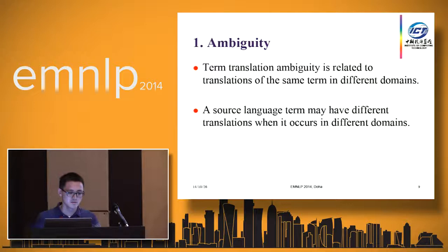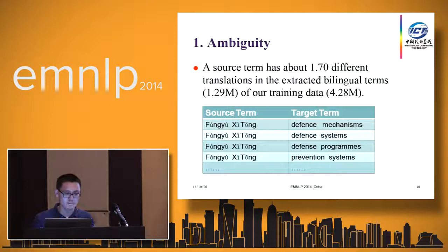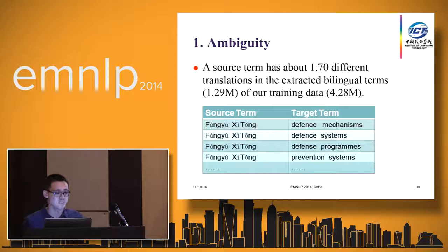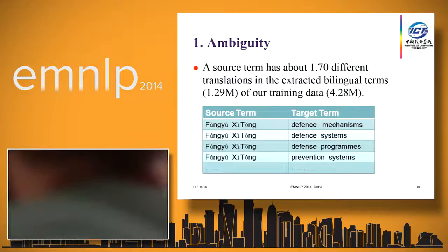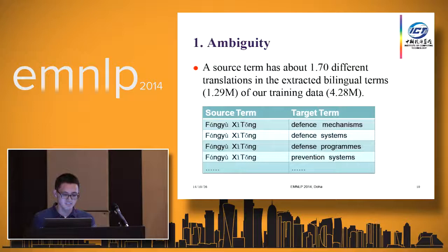Next, I will describe our motivation based on the properties of term translation. First, ambiguity. Term translation ambiguity is related to the translation of the same term in different domains. The source language term may have different translations when it occurs in different domains. According to our statistics, we extracted 1.39 million terms from training data, and the average source term has about 1.7 different translations. For example, the source language term for a given word has different term translations, as shown here. This indicates that terms are frequently used in real-world data and the source term may have different translations.